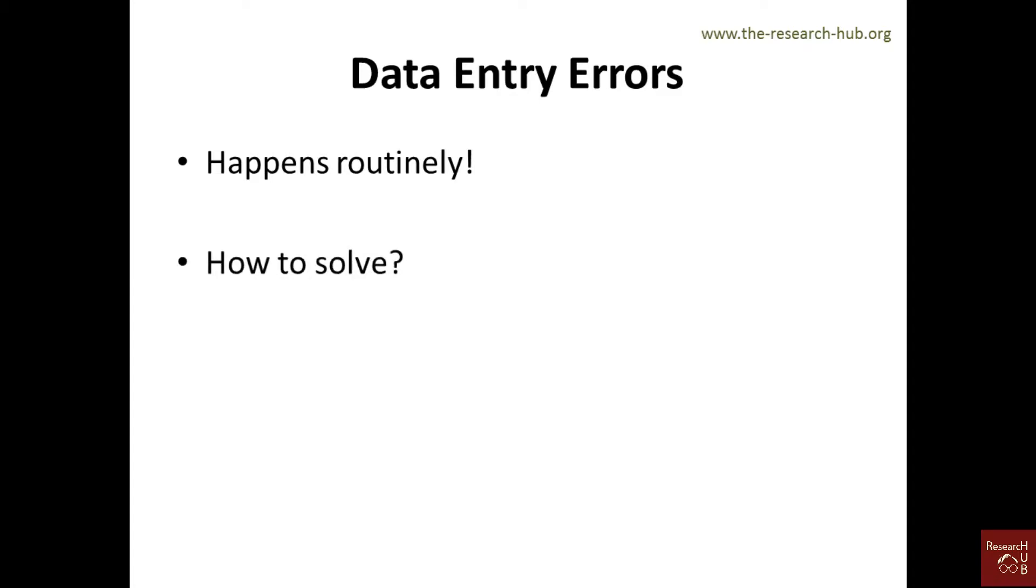Fortunately, there are ways to solve it. We can use descriptive statistics to find these issues. For example, if you use a Likert scale of one to seven, if you look at the range of the data and you have a range of seven or eight, then you know there is a mistake because when you use a Likert scale of seven points, the range could be maximum six. This kind of statistics helps us find such problems.